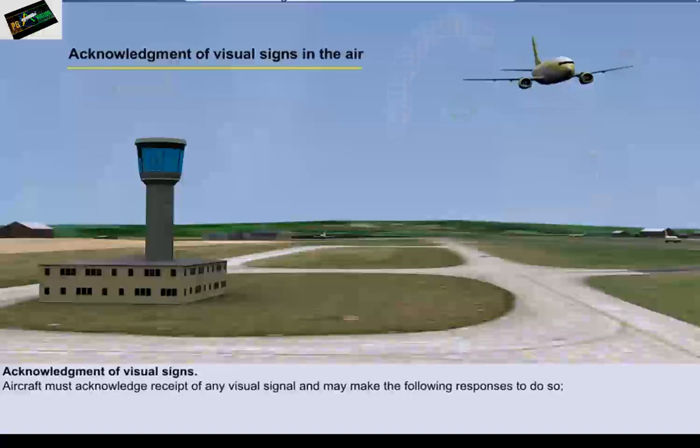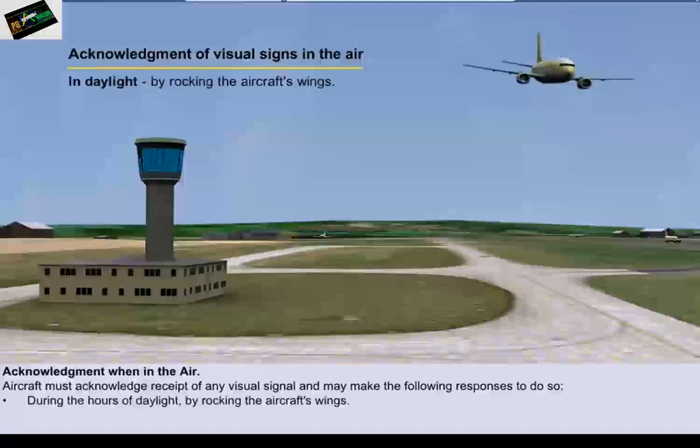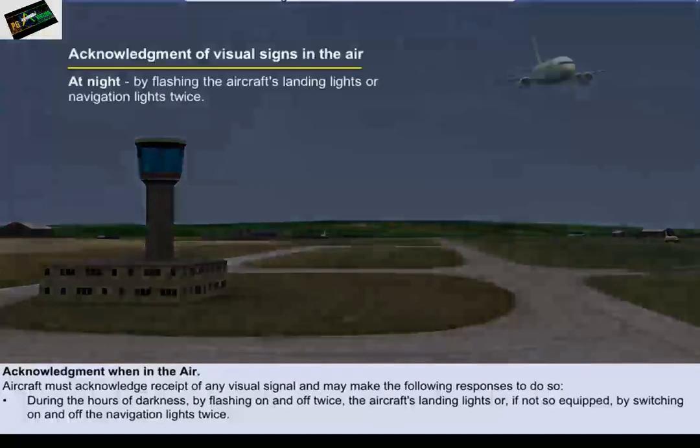Aircraft must acknowledge receipt of any visual signal and may make the following responses to do so. When in flight, during the hours of daylight, by rocking the aircraft wings. During the hours of darkness, by flashing on and off twice the aircraft's landing lights, or if not so equipped, by switching on and off the navigation lights twice.